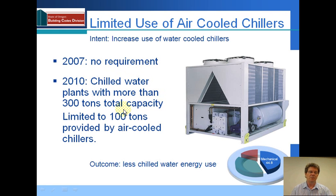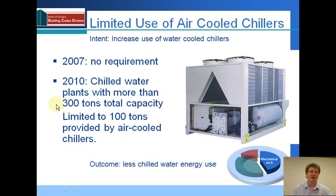Chilled water plants with more than 300 tons of total capacity limit the amount of air-cooled chillers to 100 tons. Often they do want a smaller chiller there as a backup unit. At 301 tons, that requirement exists. Up to 300 tons, it's possible to have a total of 300 tons of air-cooled chillers — just the way that requirement is written.